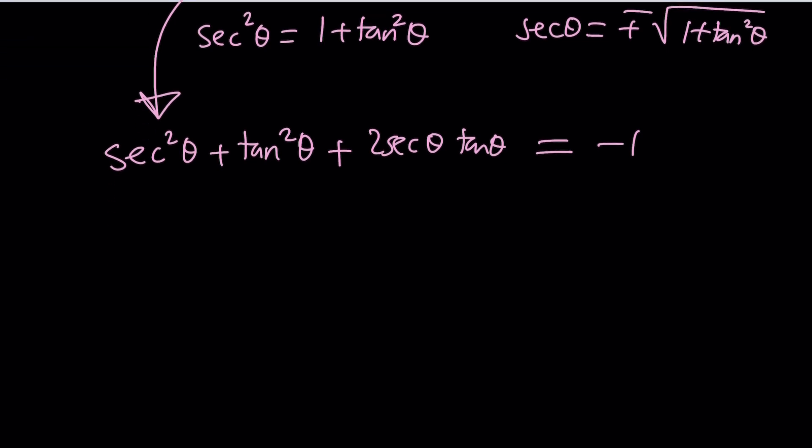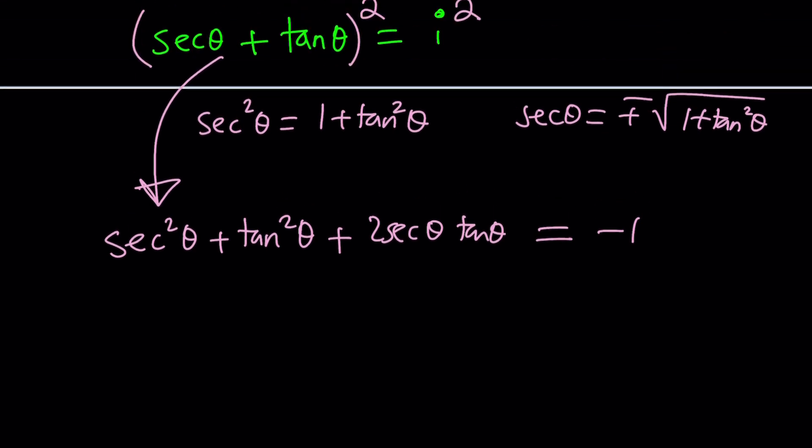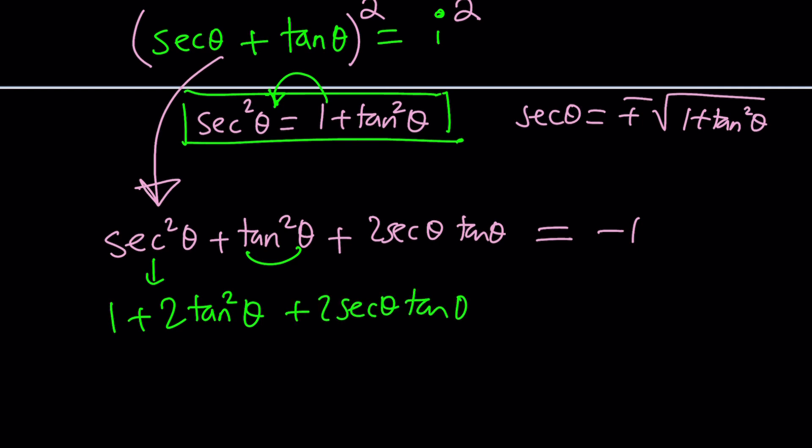Now let's see how we can simplify this. Remember we have the nice identity: sec²θ = 1 + tan²θ. So we have sec²θ, which I can write as 1 + tan²θ, but another tan²θ comes in, right? So that becomes 1 + 2tan²θ + 2sec θ·tan θ = -1.